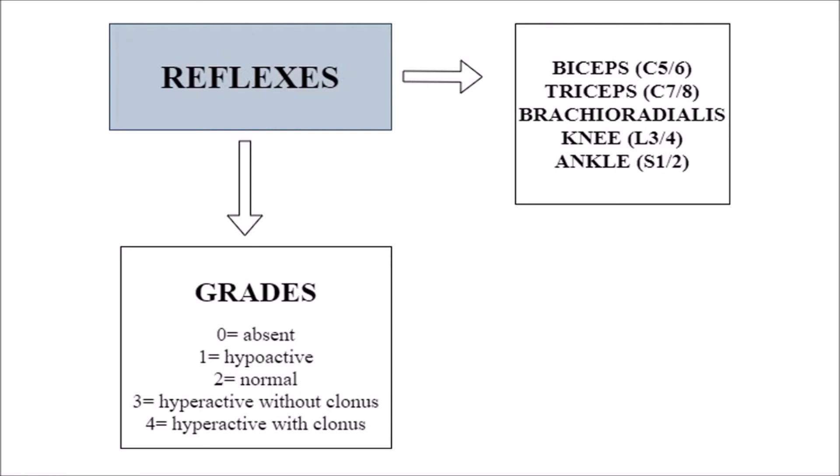Reflexes may be areflexia, normal, or hyperreflexia. The grading scale: no reflex present is 0, hypoactive is 1, normal reflexes are 2, hyperactive without clonus — meaning no involuntary muscle contractions or shaking, only an exaggerated response — is 3, and hyperactive with clonus is marked as 4.